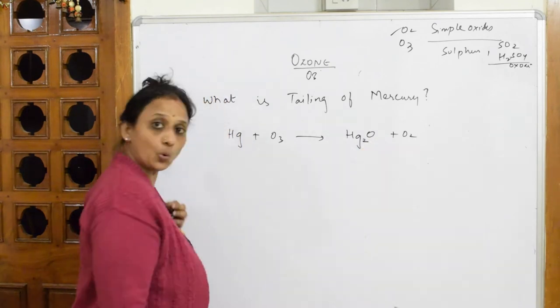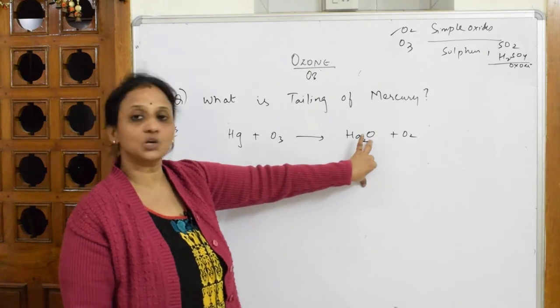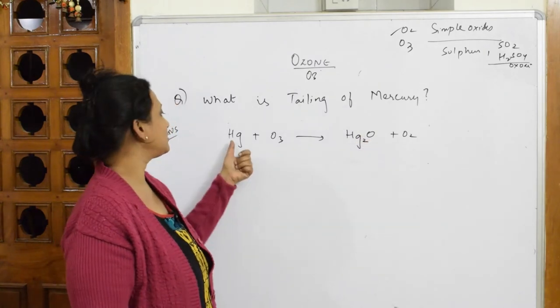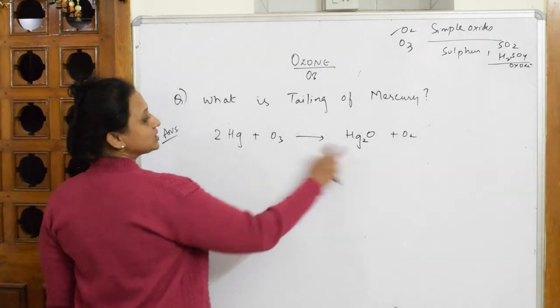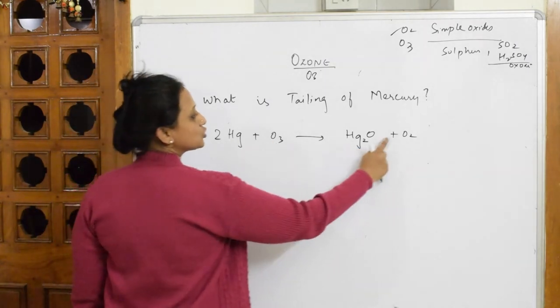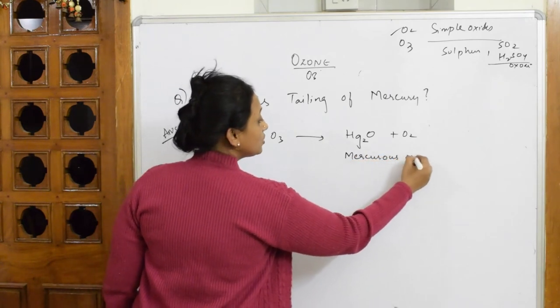It forms Hg2O. Observe carefully: O3 dissociates into O2 plus O. Two mercury atoms, three oxygens—two plus one equals three. This is called mercurous oxide.